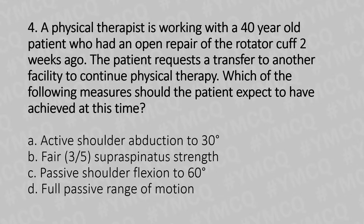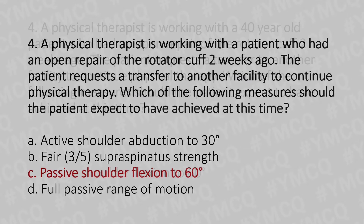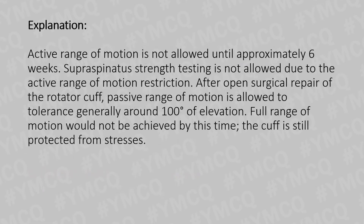And the answer is Option C: Passive shoulder flexion to 60 degrees. Explanation: Active range of motion is not allowed until approximately 6 weeks. Supraspinatus strength testing is not allowed due to the active range of motion restriction. After open surgical repair of the rotator cuff, passive range of motion tolerance is generally around 100 degrees of elevation. Full range of motion would not be achieved by this time, as the cuff is still protected from stressors.